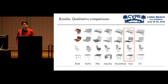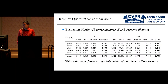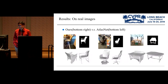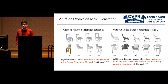We use chamfer distance and earth mover's distance for quantitative comparison, and our method achieves leading results. We also test on real images, showing results side-by-side with AtlasNet, validating generalization. We conduct ablation studies on our three-stage pipeline, removing the skeletal inference stage by directly generating the skeletal volume from the image using an octree generating network.